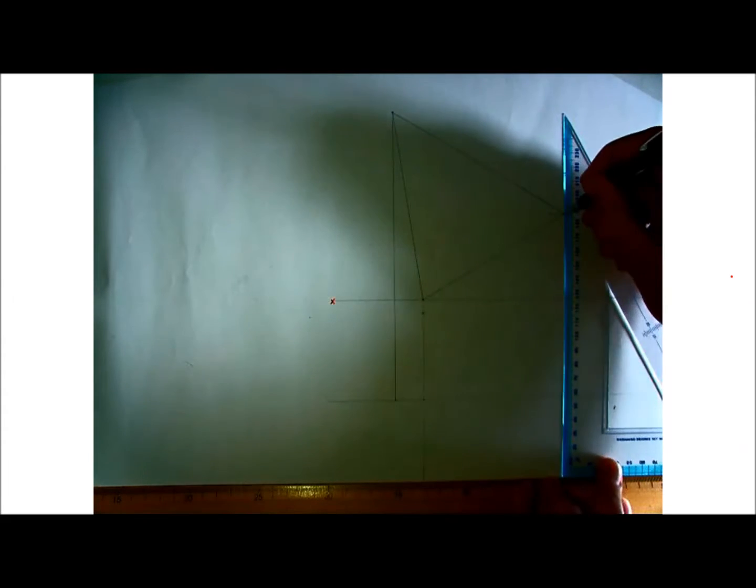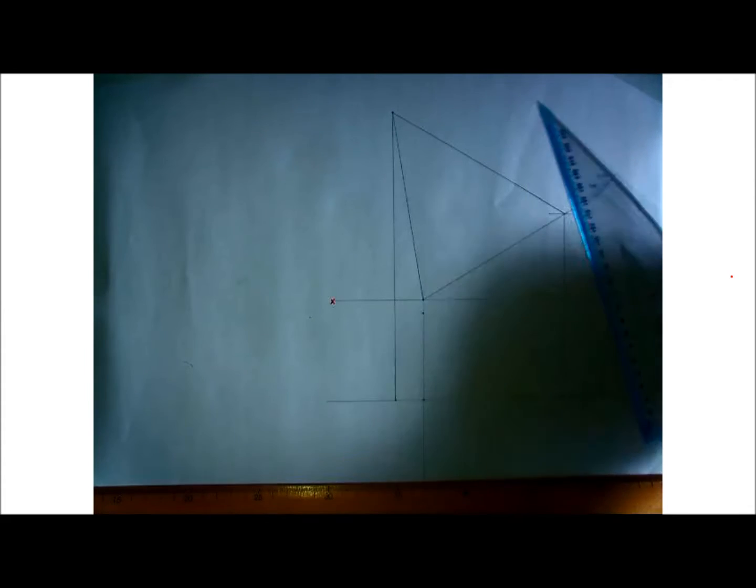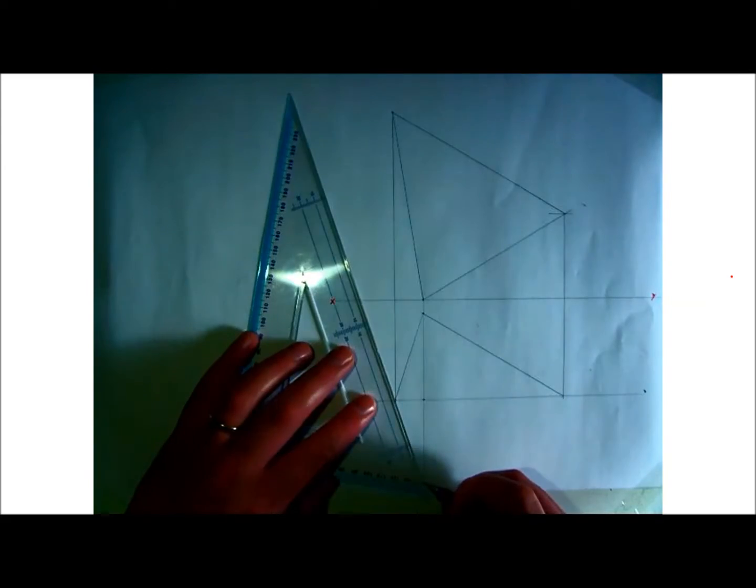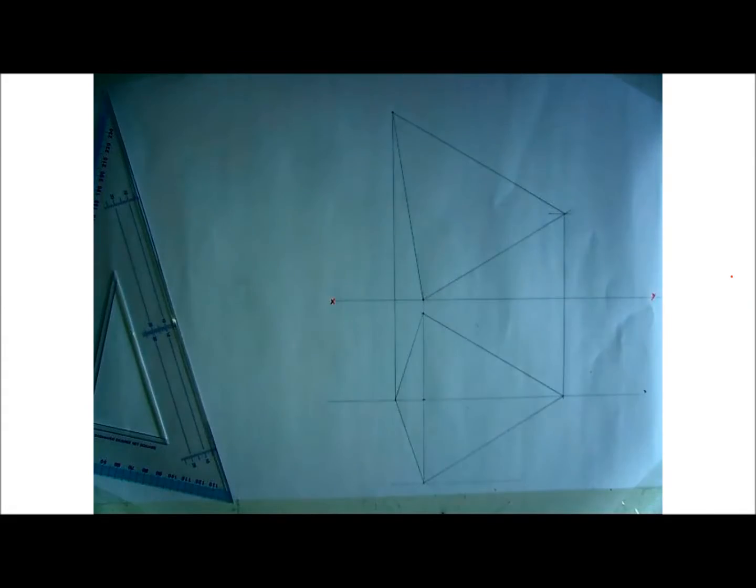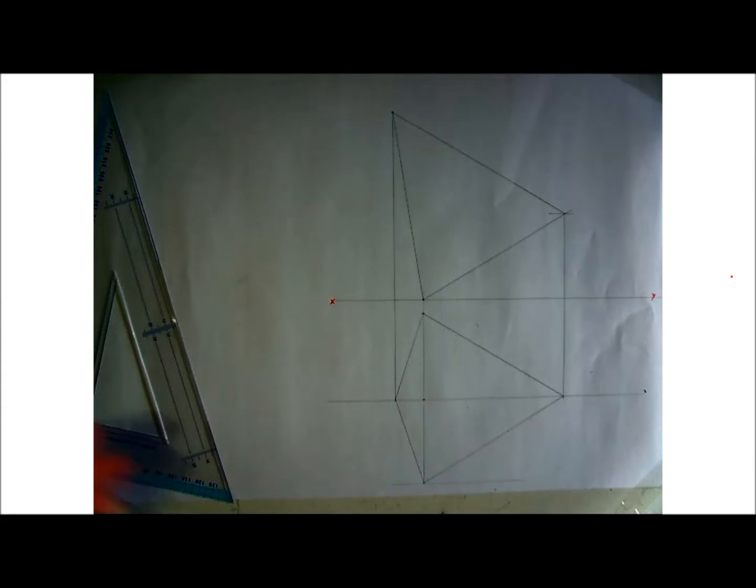So if I bring that point down to the plan I can finish off the plan of that prism. Double check. So that is plan and elevation of that prism done. So that's part A done. Next.